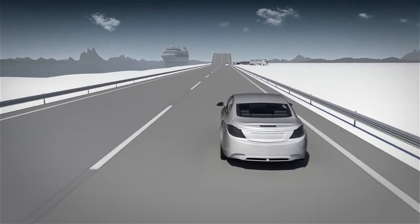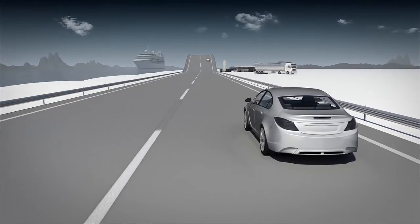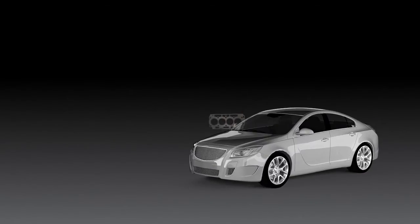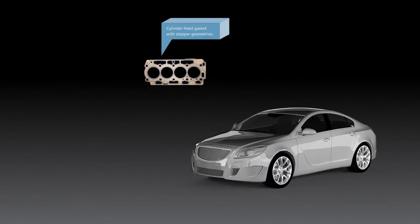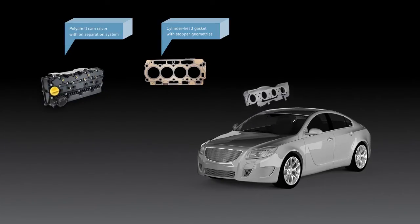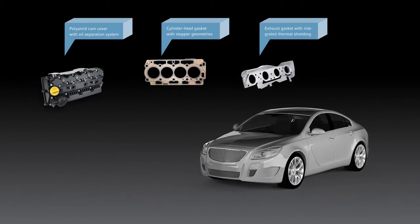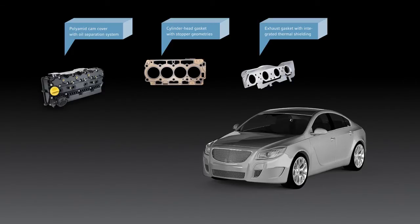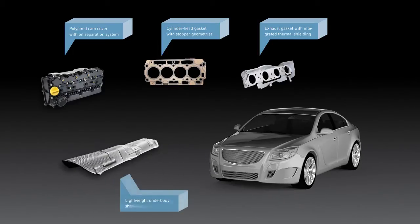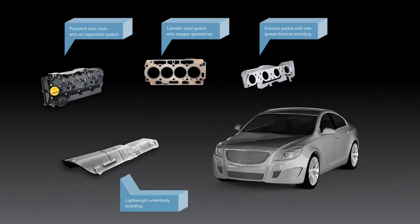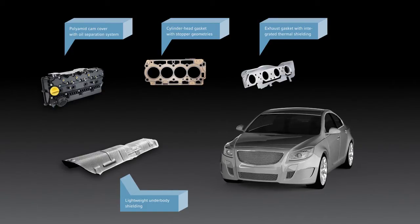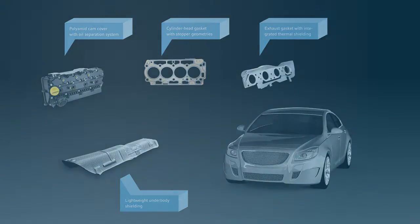The automotive industry is working very hard to develop alternative drive concepts. Elring Klinger is too. Compact turbocharged engines require sophisticated sealing solutions for engines as well as turbochargers. Heat sensitive components inside the engine, transmission and exhaust system are in need of more shielding components. Lightweight polyamide parts reduce the weight of the vehicle, exhaust gas purification systems lower particulate matter and exhaust gas emissions.